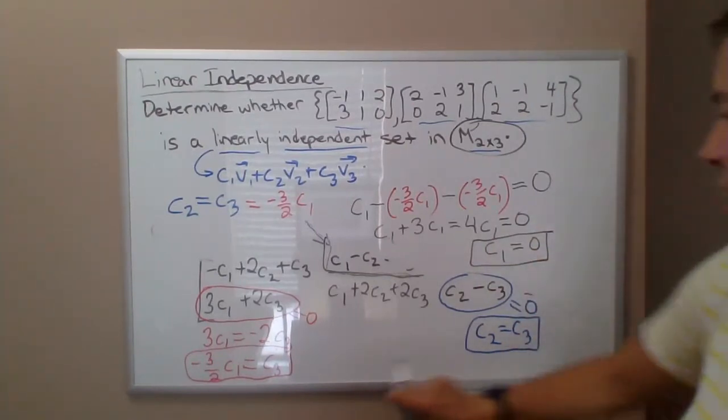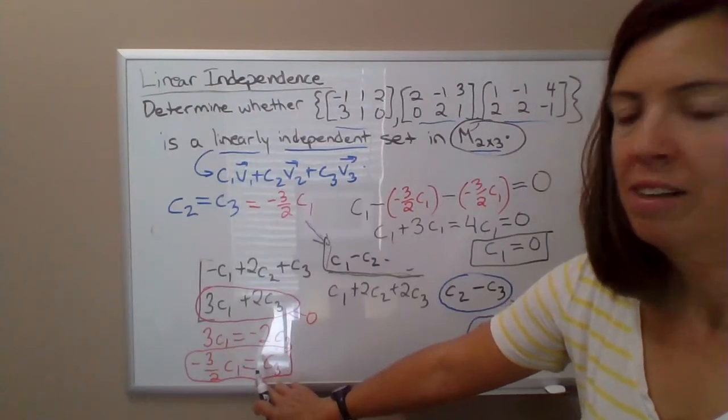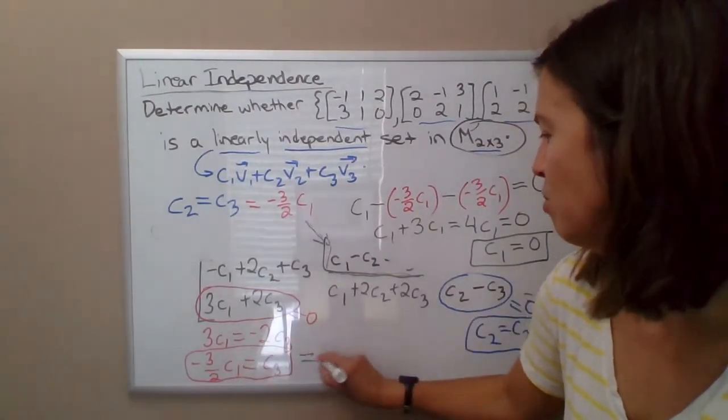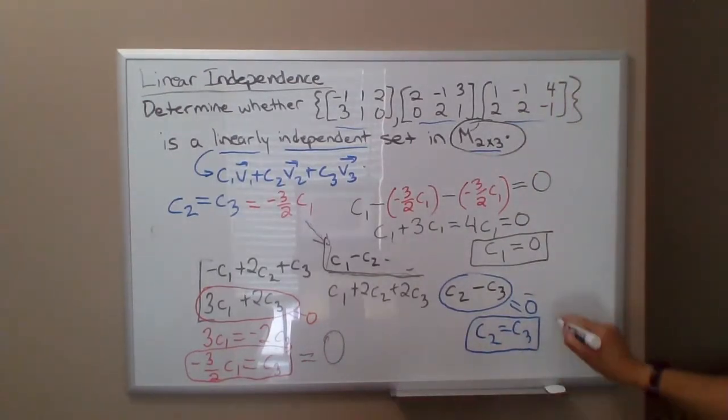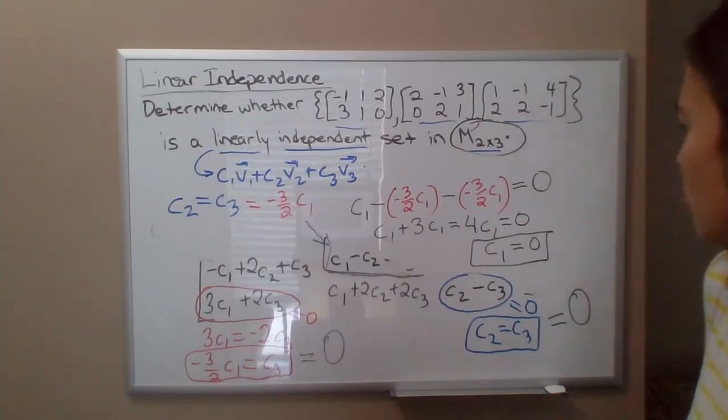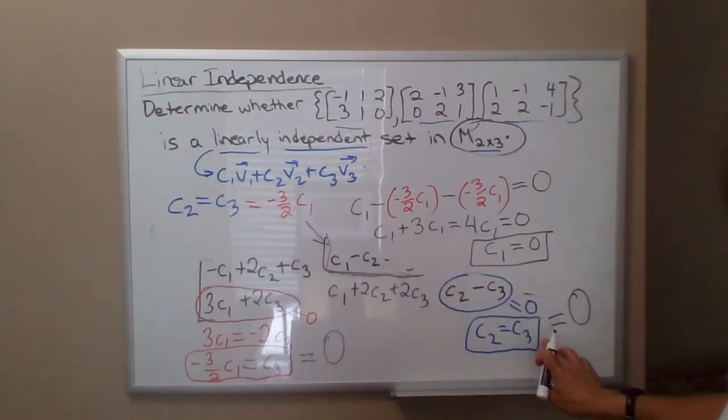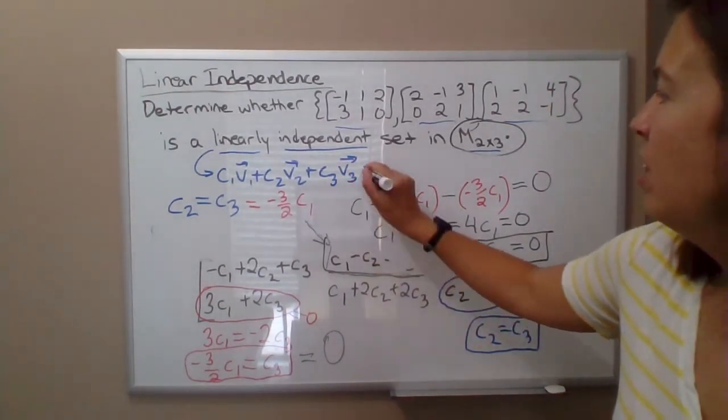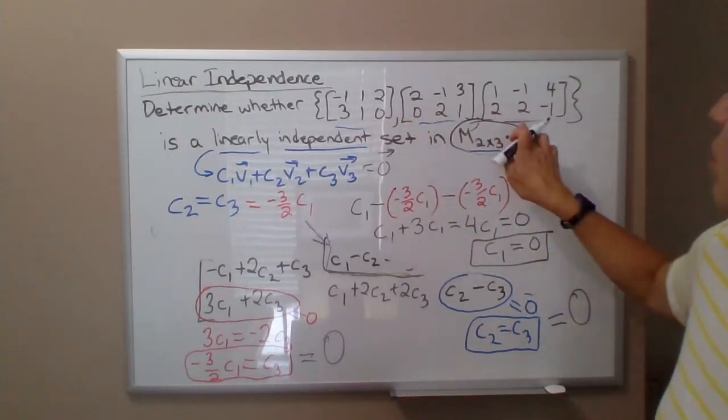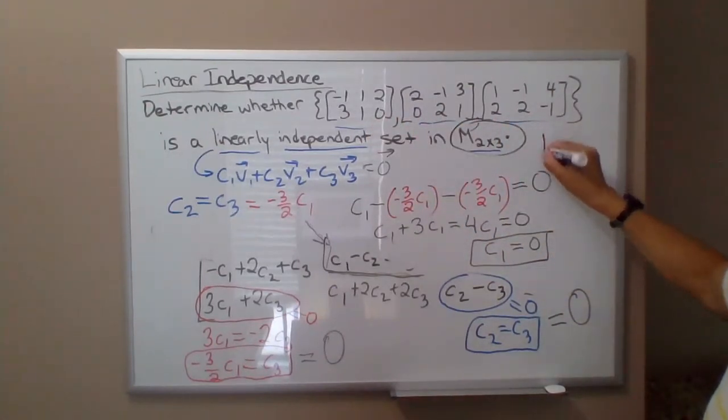And now the dominoes are going to fall. So if c1 is equal to zero, then c3, which is negative three halves times zero, is going to have to equal zero. And then c2 is equal to c3, so that's going to have to equal zero. So now we've shown that this system has only the trivial solution: c1, c2, c3 are all equal to zero. So this equation does only have the trivial solution. So that proves that these matrices are linearly independent.